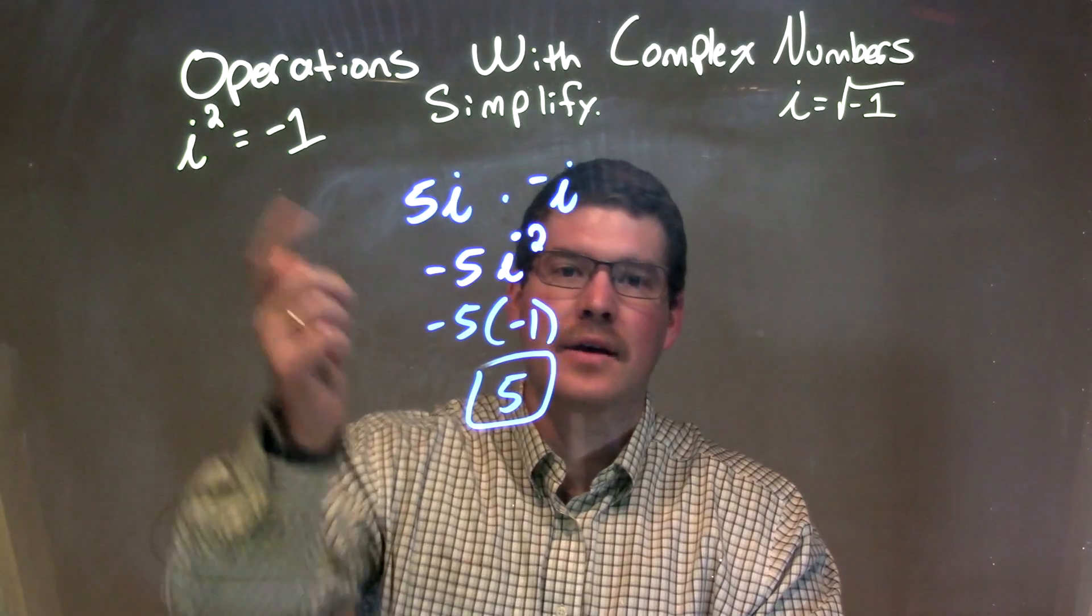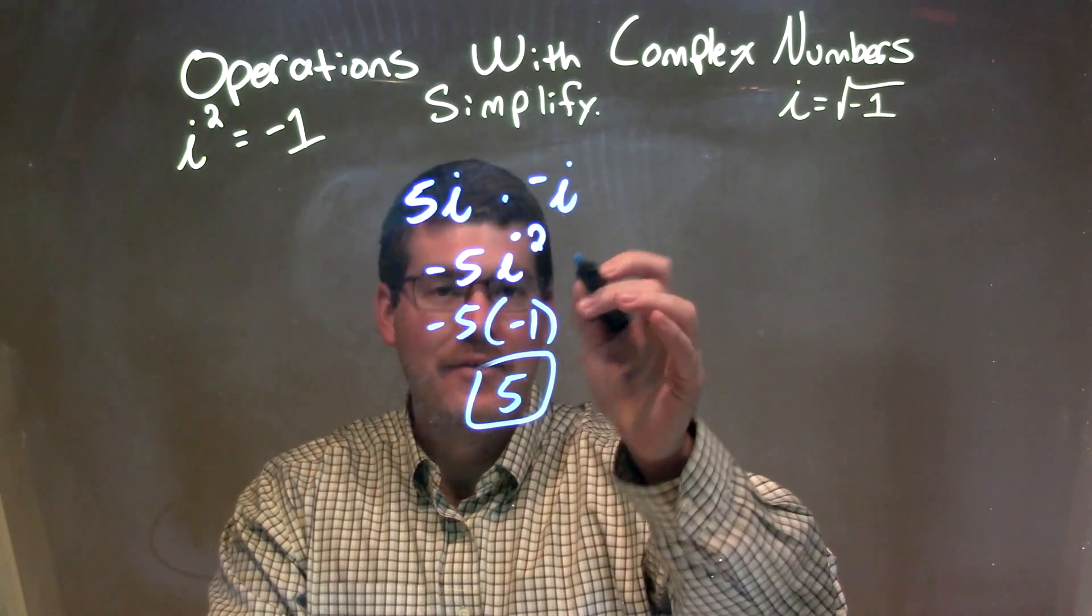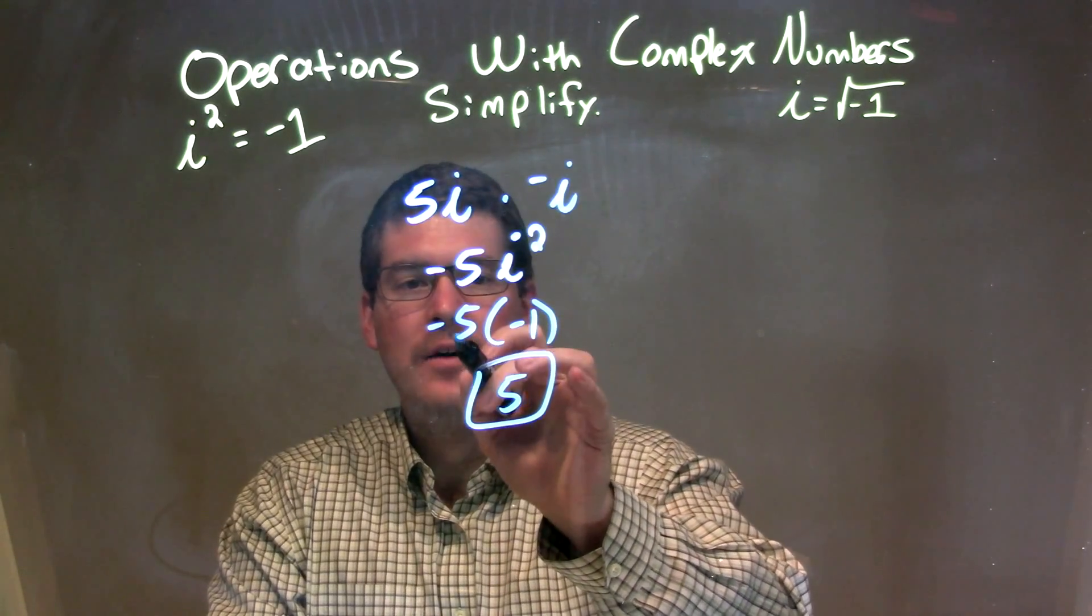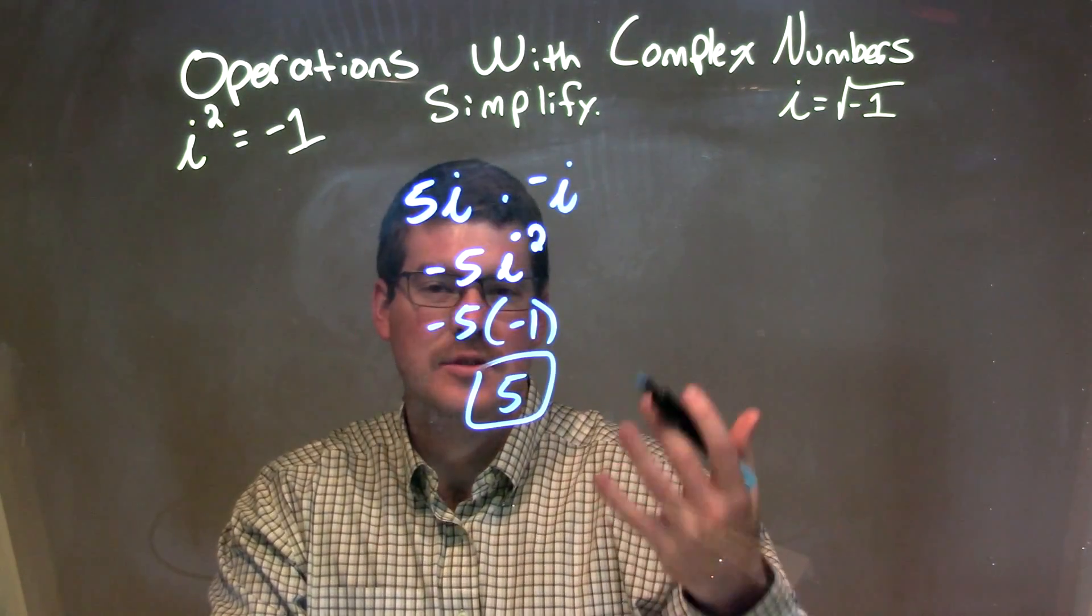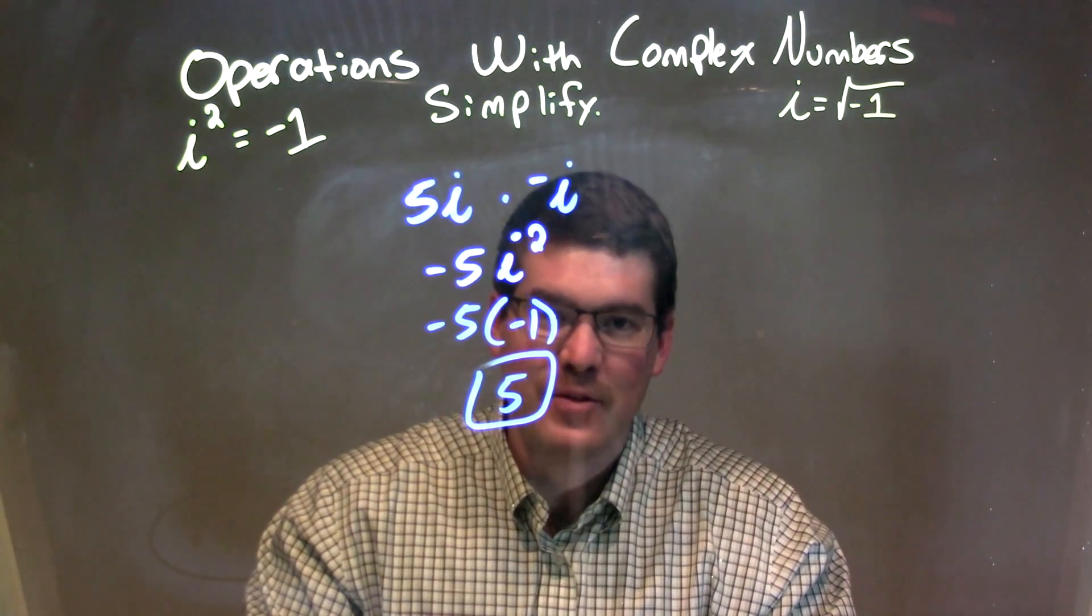Well, i squared we know to be negative 1, since i squared is negative 1. We had to convert that right there to be negative 1, and we have negative 5 times negative 1, which is just positive 5. So again, our final answer here is just positive 5.